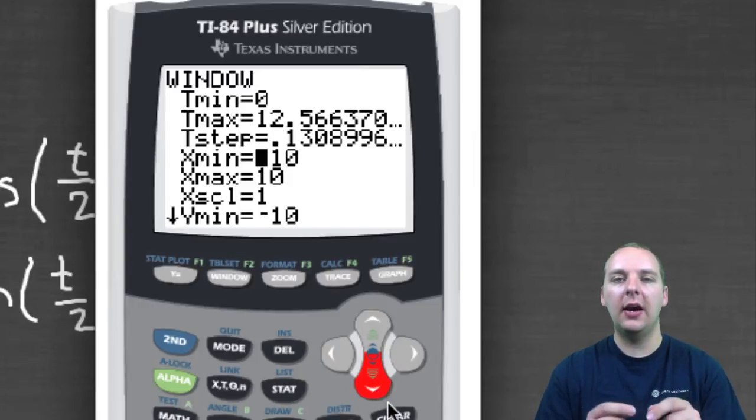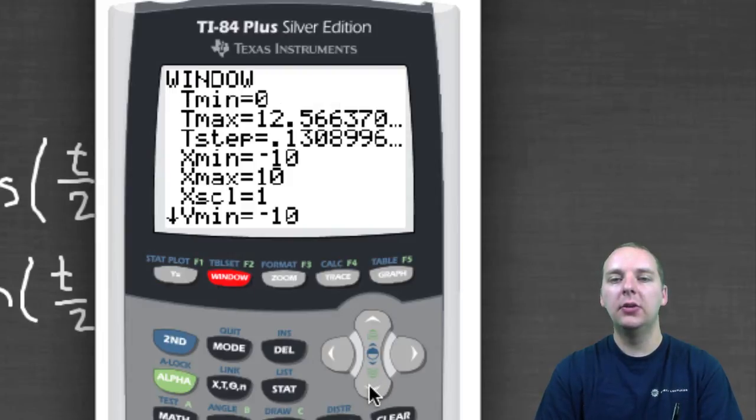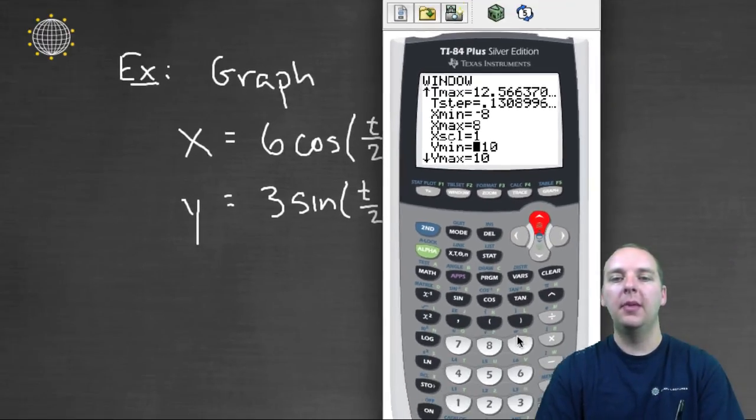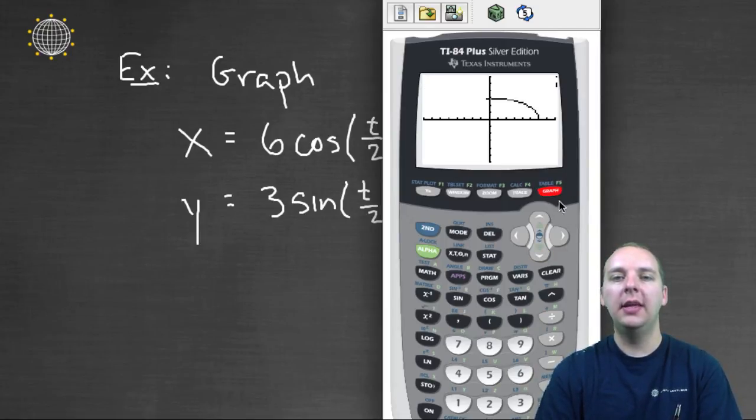It looks like our ellipse went left 6 units and right 6 units, and up 3 units and down 3 units, probably due to this 6 and this number 3. So, let's maybe make it X min of negative 8 to positive 8, and these could be arbitrary. I mean, you could pick them however you want to pick them. And maybe the Y min to Y max, I don't know, minus 6 to 6. And then when you graph it again, you'll see it looks larger because in effect we've zoomed in.